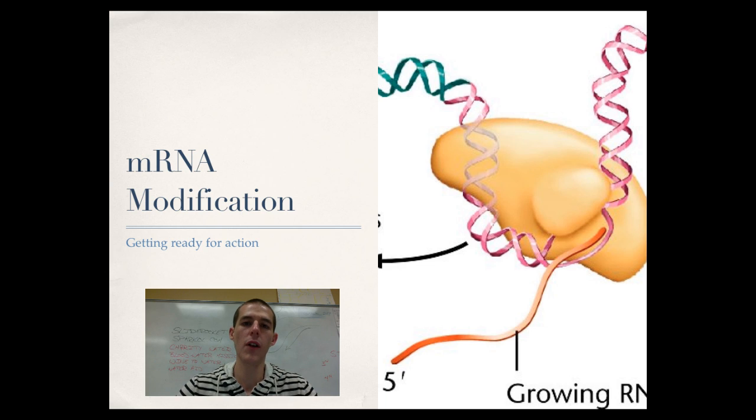The reason that we need to process it and modify it is a couple-fold. One, it usually cannot get out of the nucleus into the cytoplasm until it's been processed. There's also different combinations of proteins we can get based on how we process this mRNA. So let's talk about a couple of those things as we wrap up our discussion for the day.